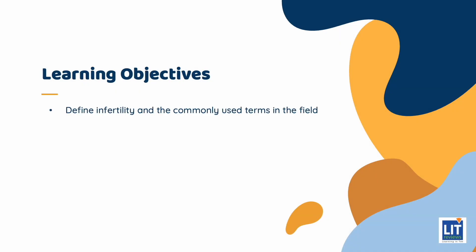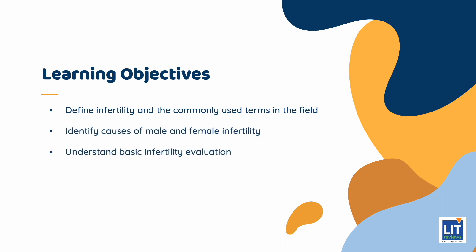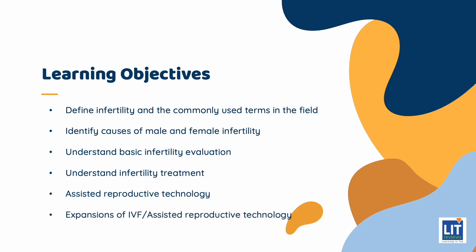Our learning objectives are to define infertility and the commonly used terms in the field, identify causes of male and female infertility, understand basic infertility evaluation, and understand infertility treatment. We'll also talk about what the term assisted reproductive technology means, and the various expansions of IVF and assisted reproductive technology that are becoming increasingly relevant.